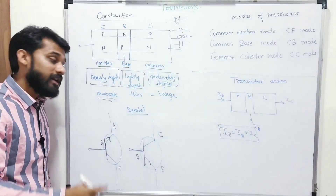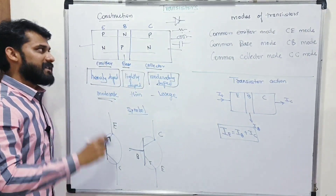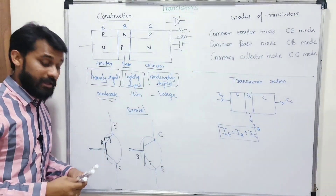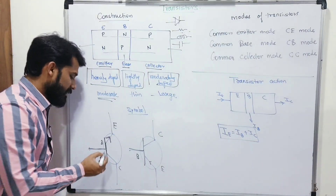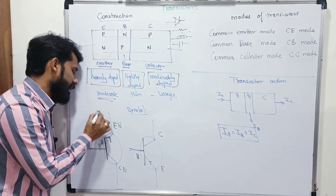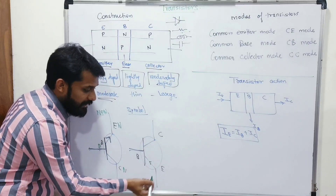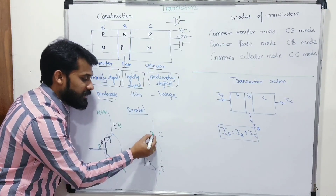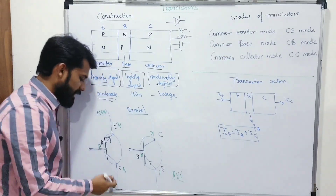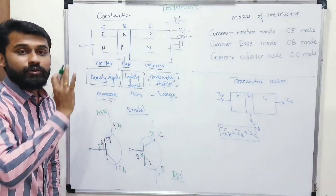The arrow also tells you whether it is PNP or NPN. Current always flows from positive terminal to negative terminal. So if the arrow points inward, that means the emitter side is negative, making the structure N-P-N — an NPN transistor. If the arrow points outward, the emitter side is positive, making it a P-N-P — a PNP transistor.